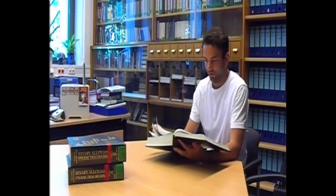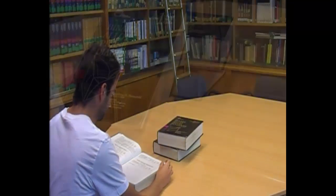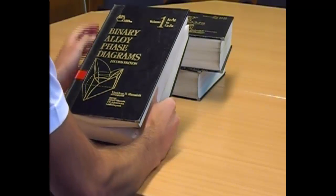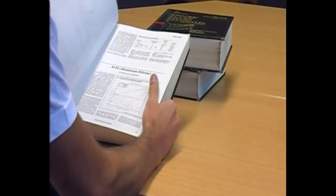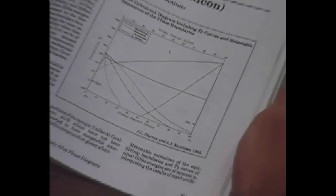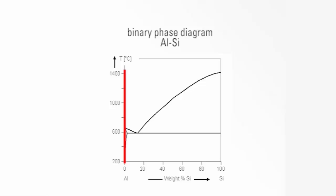In order to develop materials, in former times people had to draw back on large books comprising many phase diagrams. Binary phase diagrams like this one on aluminum-silicon show how the solidification temperature varies with composition. The so-called liquidus temperature varies with composition.